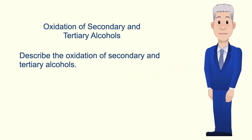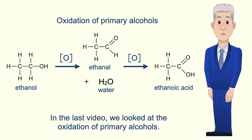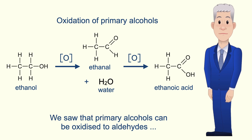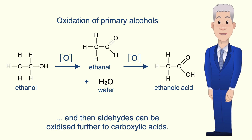Hi and welcome back to Free Science Lessons. By the end of this video you should be able to describe the oxidation of secondary and tertiary alcohols. In the last video we looked at the oxidation of primary alcohols. We saw that primary alcohols can be oxidized to aldehydes, and then aldehydes can be oxidized further to carboxylic acids.